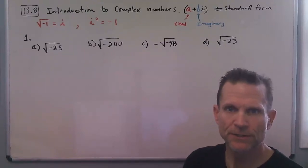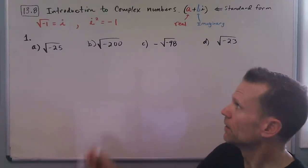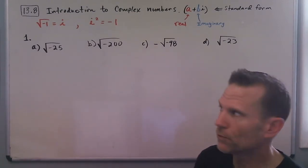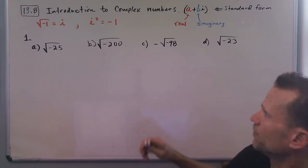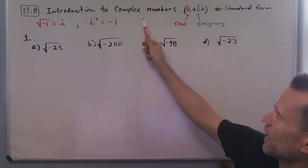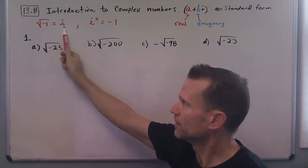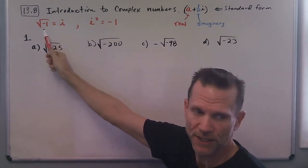Okay, moving on to section 13.8, introduction to complex numbers. We enter a whole new realm of numbers called the imaginary numbers and then the complex numbers. By definition, i is equal to the square root of negative 1.